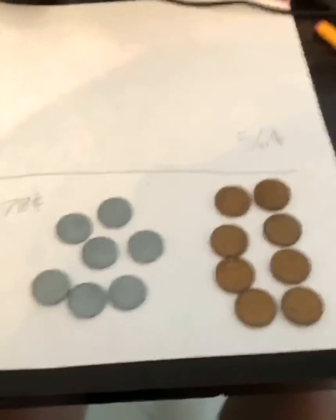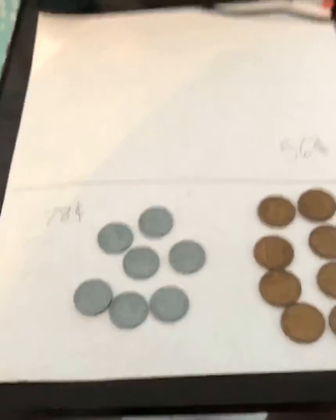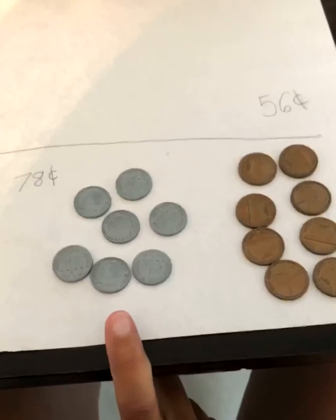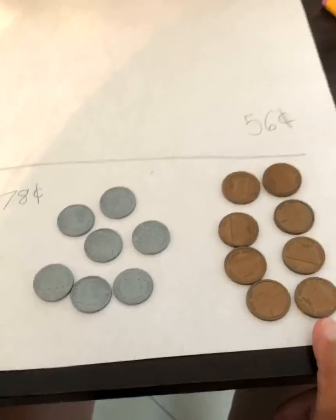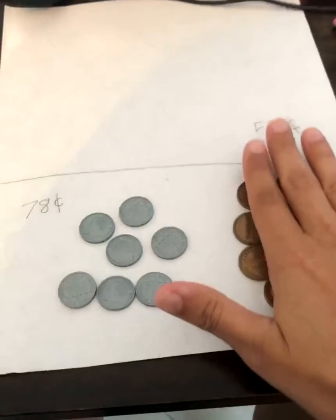So this is using your tens and your ones. I have seven dimes over here and eight pennies over here. That is 15 coins altogether.